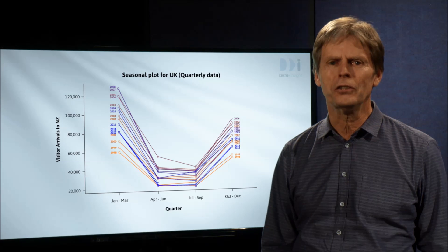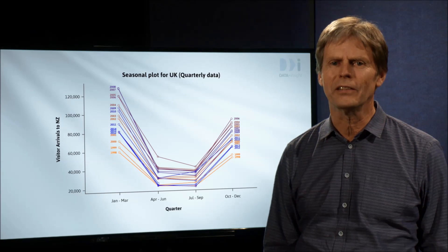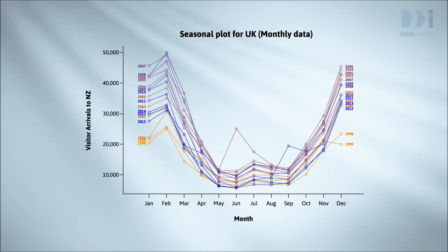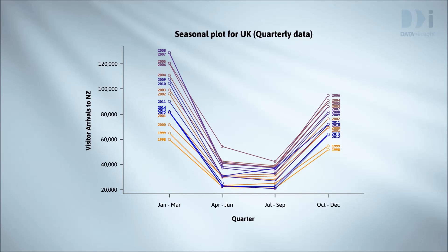The October to December figures are high because in New Zealand December is a warm month and contains the Christmas holidays. We can check on this because Statistics New Zealand also publishes a monthly version of this series. The big months are January, February, and December. Seasonal patterns are common in time series data. There are often patterns that are repeated across hours of the day, days of the week, or months or quarters of the year, and joining the points by lines helps us to see these patterns. A series with a seasonal pattern is described as a seasonal series. They're common in social and economic data, particularly that published by government agencies, and in some sorts of biological data.